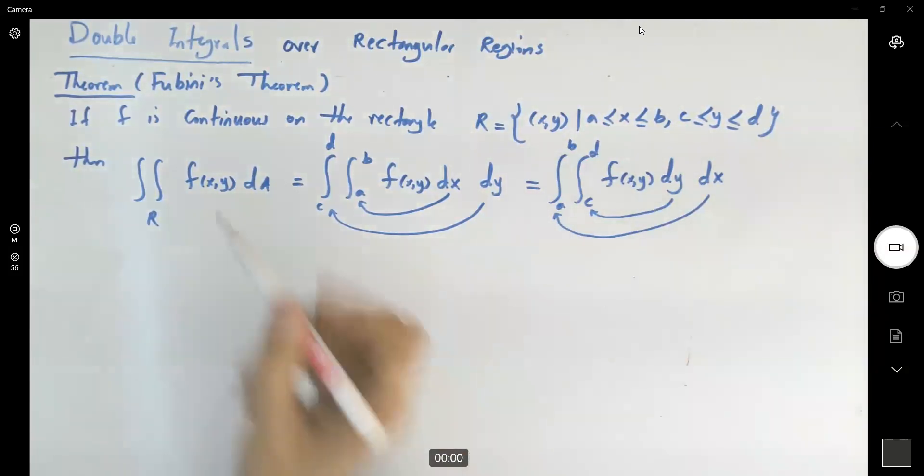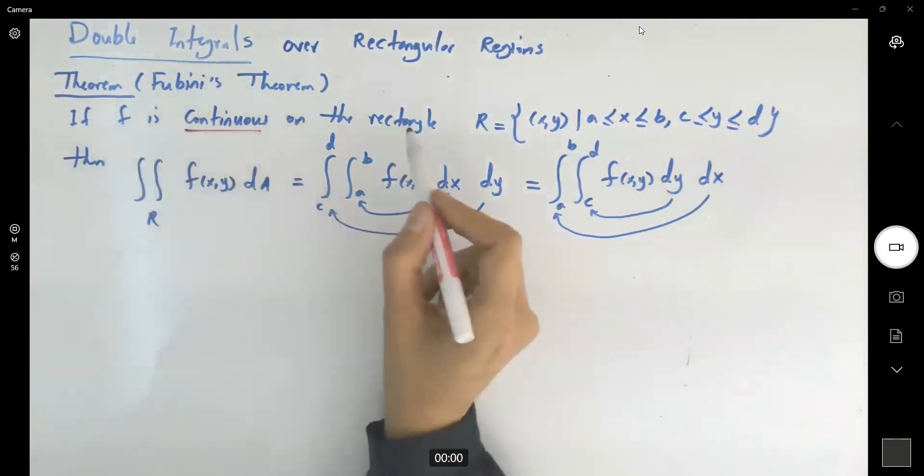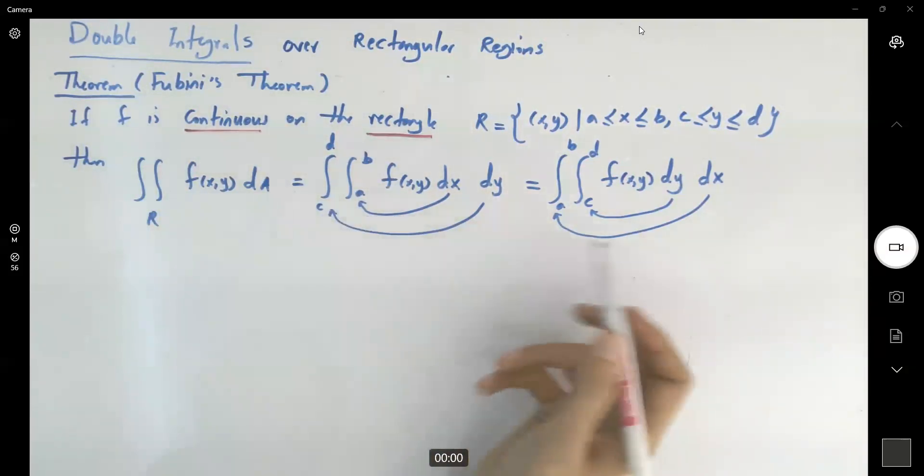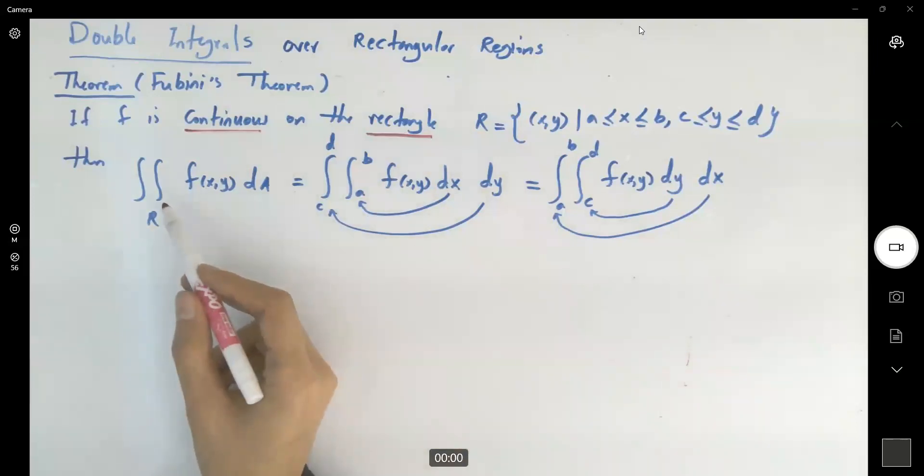As long as you have a continuous function over a rectangular region, you're allowed to use either of these methods to calculate the double integral. Sometimes the double integral is asking about the volume, sometimes it's asking about different things. If you get a negative number, it doesn't represent the volume. Let's go over one example.